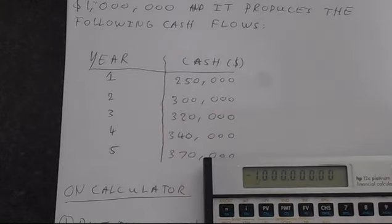And so we're going to do 250,000. Type the number in first, obviously. And then press G. And you've got cash flow J is on the payment button. That's that one done.